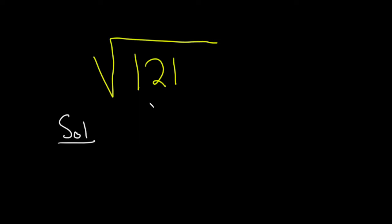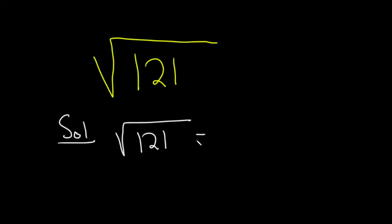Well it turns out that this is one that you can just memorize. The answer is actually just 11. So the square root of 121 is equal to 11. So that's the answer. So let's check it. You can check it by multiplying 11 times 11. So let's do that.